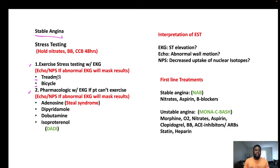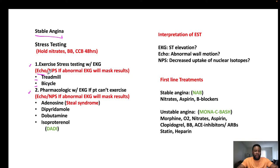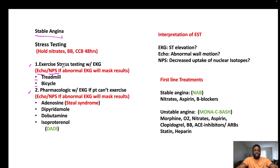If EKG is not suitable — for example, the patient had a prior massive MI or has abnormal baseline EKG that could mask changes — we use echocardiography (transthoracic or transesophageal) to see wall motion during exercise. We can also use a nuclear perfusion study to assess how the heart is receiving blood during exertion.